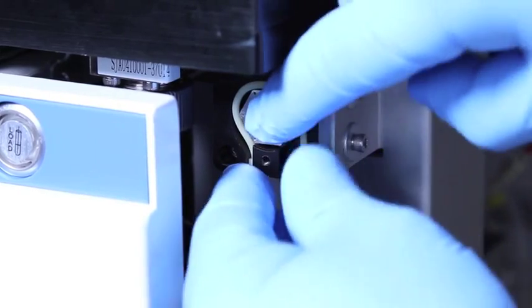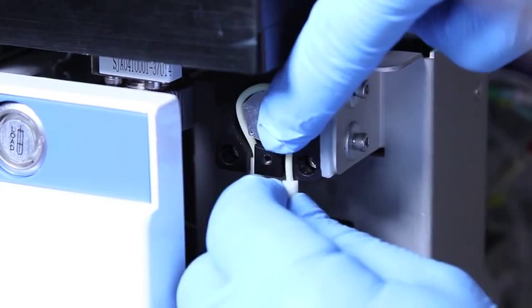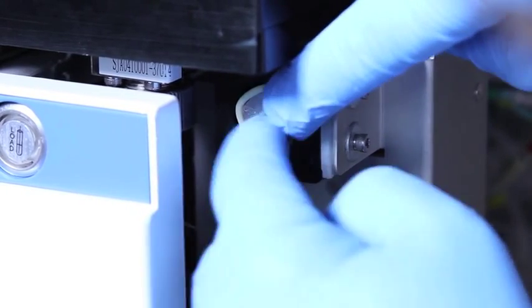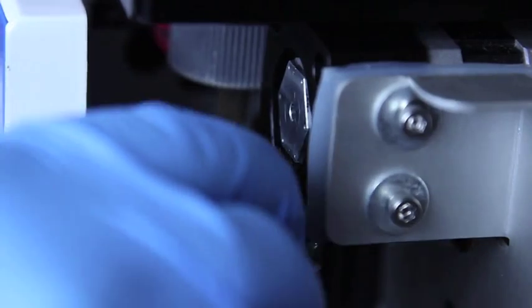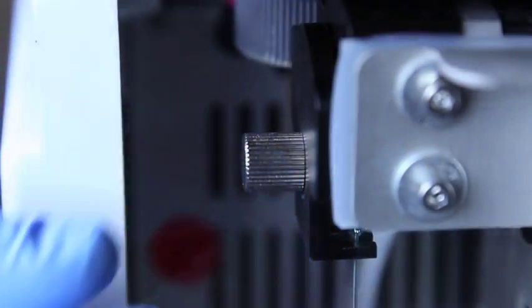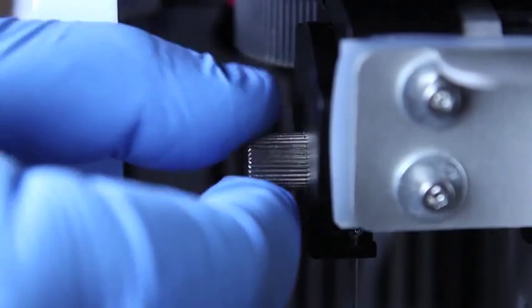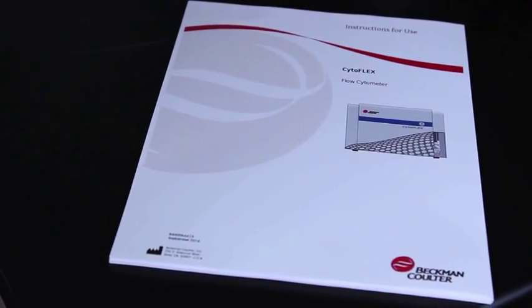Fit the new sample tubing into the peristaltic pump by inserting both stoppers and running the tubing into the peristaltic pump. Replace the cover by tightening the thumb screw. Please refer to the IFU for detailed instructions.